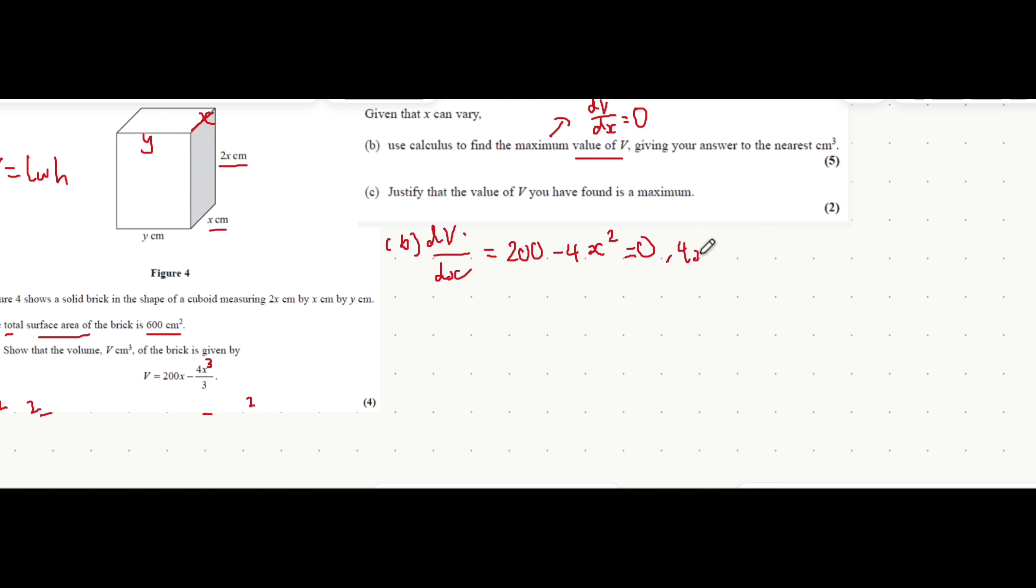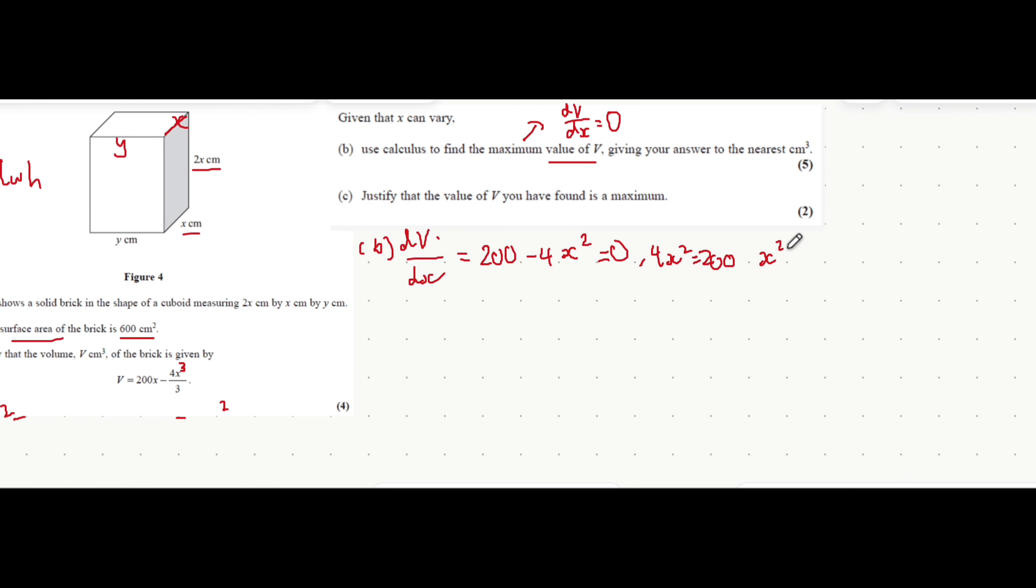Add 4x squared to both sides, so 4x squared is equal to 200. Divide both sides by 4, so x squared is equal to 50. Square root both sides, so x is equal to root 50.